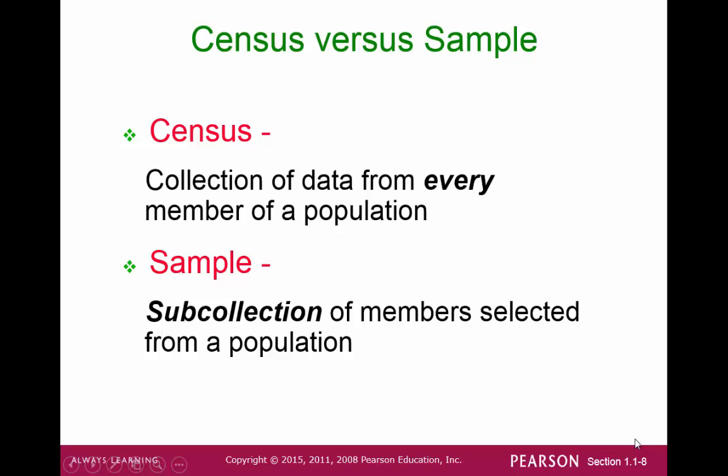But there are times when we might not have access to the big group. In these cases, we would need to find a subgroup — we would have to obtain a sample. We would want this sample to be representative of the whole population we are studying. We will take a look at this process later in this chapter.